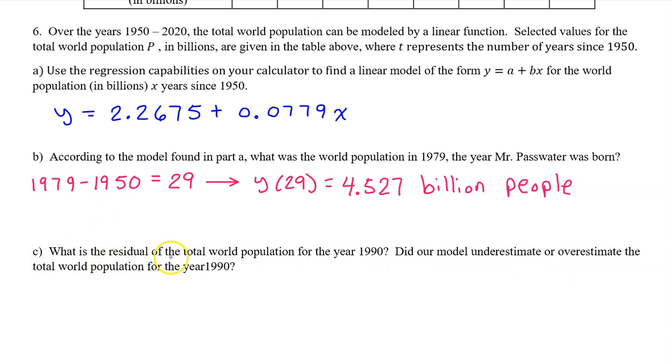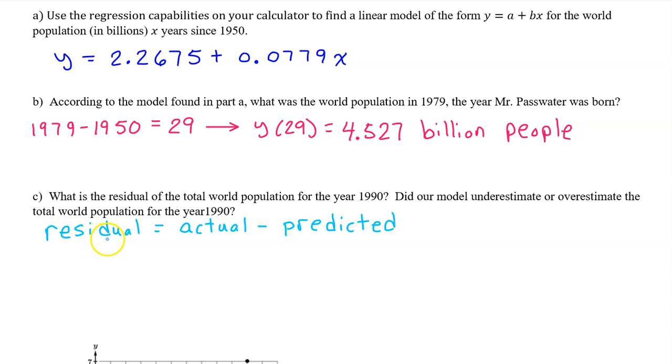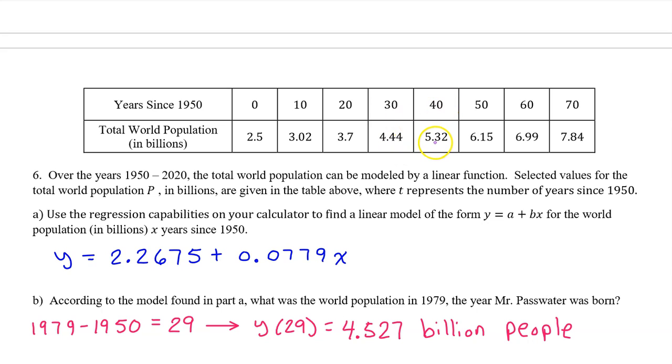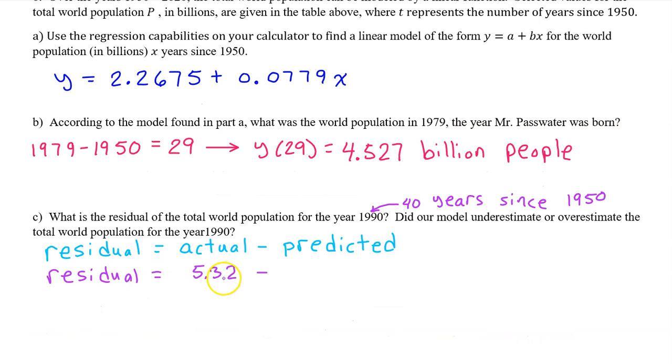Part C. What is the residual of the total world population for the year 1990? Did our model underestimate or overestimate the total world population for the year 1990? Recall that the residual value equals the actual value minus the predicted value. Let's look back at the table for the actual world population in 1990. However, keep in mind that 1990 is 40 years since 1950, so 40 will be the input value. So the total world population in 1990 was 5.32 billion people.